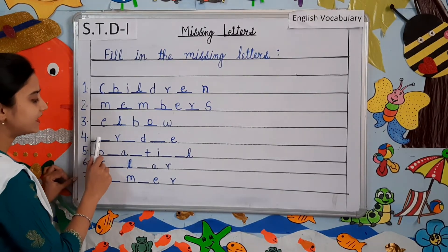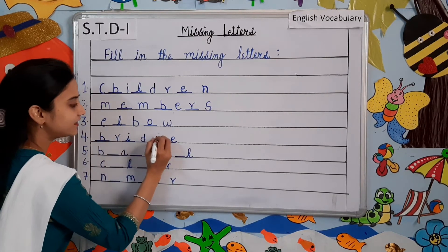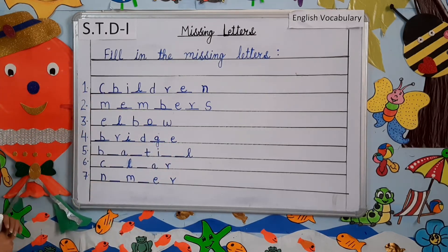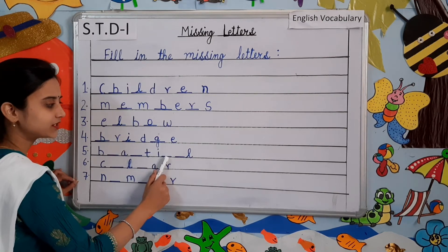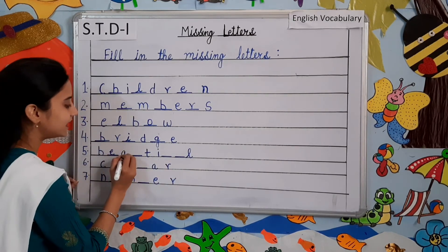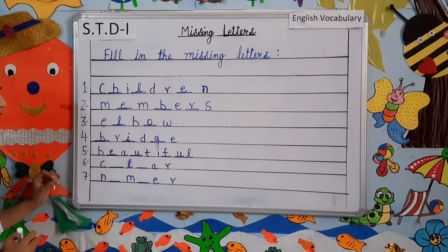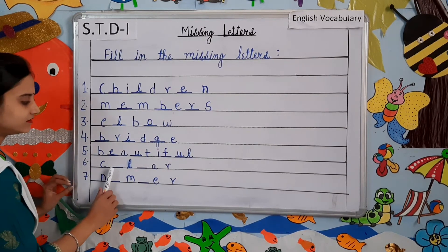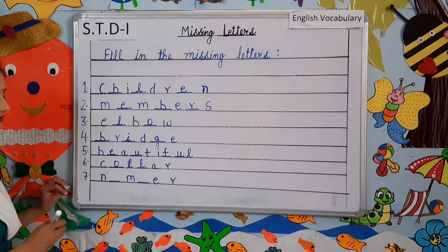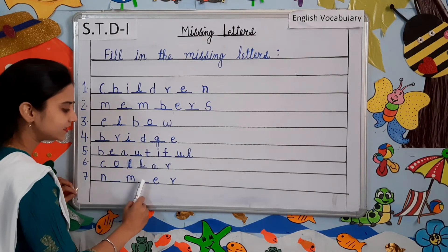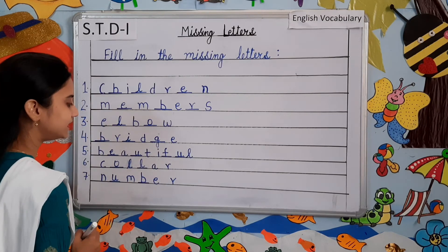Number four: dash R-D-E-E. So B-R-I-D-G-E. Bridge. Number five: B-B-A-T-I-L. B-E-A-U-T-I-F-U-L. Beautiful. Number six: C-L-A-R, C-O-L-L-A-R. Collar. Number seven: N-M-E-E-R. N-U-M-B-E-R. Number. Understood children?